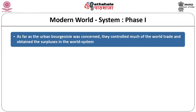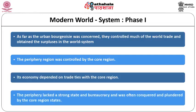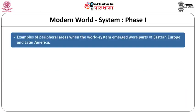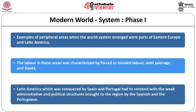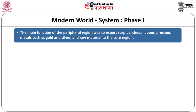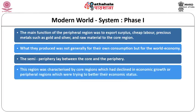The periphery region was controlled by the core region; its economy depended on trade ties with the core and it lacked a strong state and bureaucracy, often being conquered and plundered. Examples of peripheral areas included parts of Eastern Europe and Latin America, where labor was characterized by forced or bonded labor, debt peonage, and slavery. Latin America, conquered by Spain and Portugal, had a weak administrative and political structure. The main function of the periphery was to export surplus cheap labor, precious metals, and raw materials to the core.